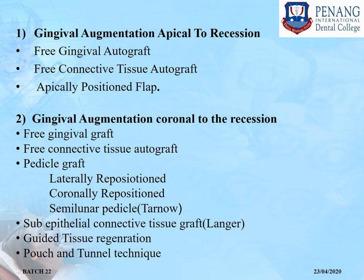Before discussing various techniques, let us review Miller's classification of gingival recession. Class 1 is marginal tissue recession that does not extend to the mucogingival junction, with no loss of interdental bone or soft tissue. Class 2 extends to or beyond the mucogingival junction with no loss of interdental bone or soft tissue. Class 3 extends to or beyond the mucogingival junction with loss of interdental bone, soft tissue, or malpositioning of the tooth. Class 4 extends to or beyond the mucogingival junction with severe loss of interdental bone, soft tissue, and severe malposition of the tooth.